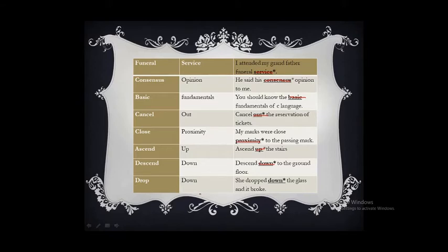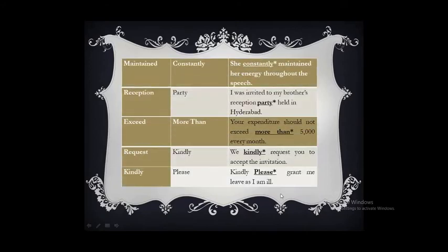'Drop down' — drop means putting something down, so using 'down' again is superfluous. The correct form is: 'She dropped the glass and it broke.' 'Maintained constantly' — maintained means continuing something or doing it constantly, so using 'constantly' again is superfluous. The correct form is: 'She maintained her energy throughout the speech.'